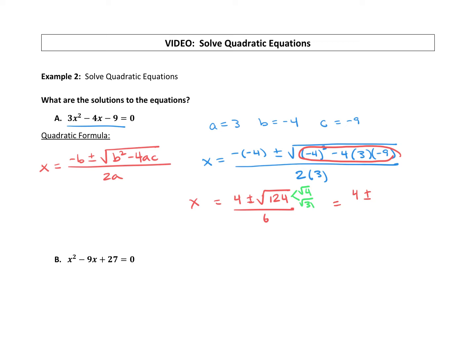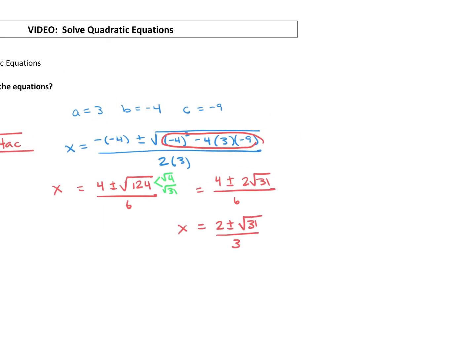To continue simplifying, we have 4 plus or minus — instead of square root of 124, we break that down: the square root of 4 is 2, square roots of 31 — all over 6. Now, I call this the 'triangle of numbers': the number out front, the number in front of your square root, and your denominator. If those three numbers can all be divided by the same value, you can reduce. So 4, 2, and 6 all divide by 2: 4 divided by 2 is 2, 2 divided by 2 is 1, so 1 times square root of 31, and 6 divided by 2 is 3.